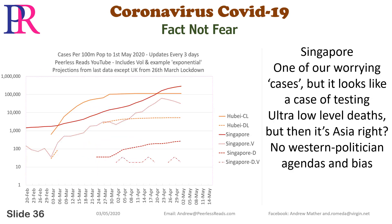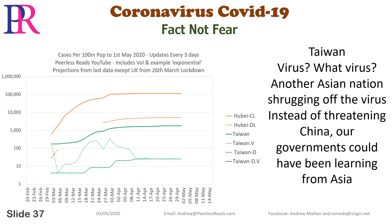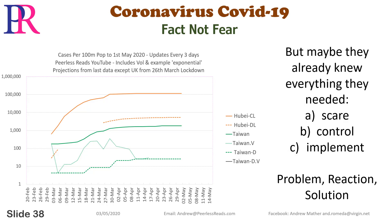Singapore: one of our worrying cases, but it looks like a case of testing — ultra low level deaths. But then it's Asia, right? No Western politician agendas and bias. Taiwan: virus, what virus? Another Asian nation shrugging off the virus. Instead of threatening China, our governments could have been learning from Asia. But maybe they already knew everything they needed: scare, control, implement — problem, reaction, solution.